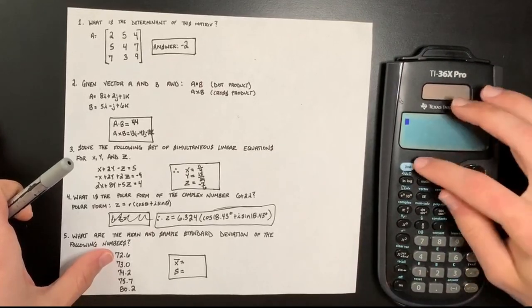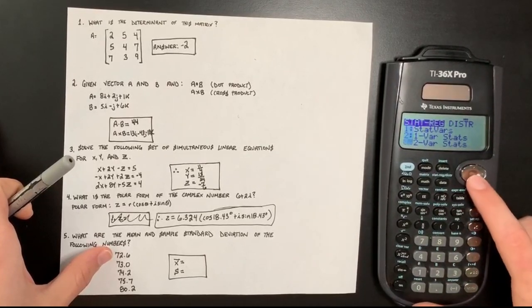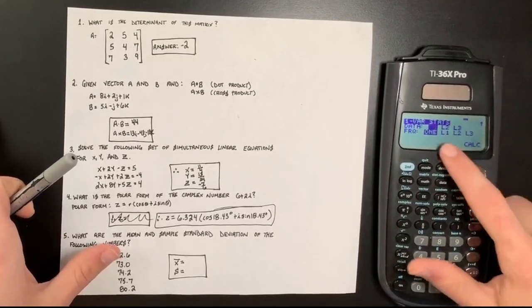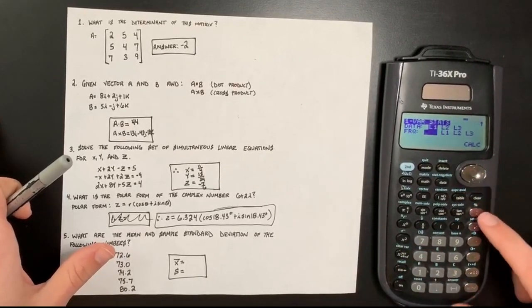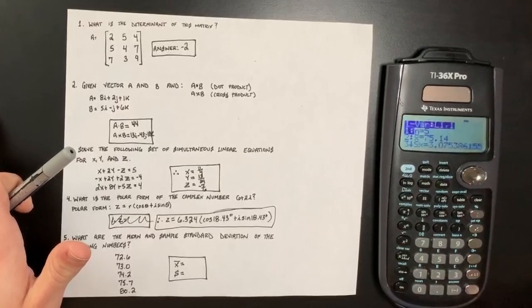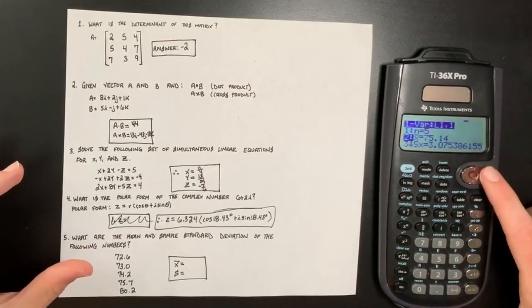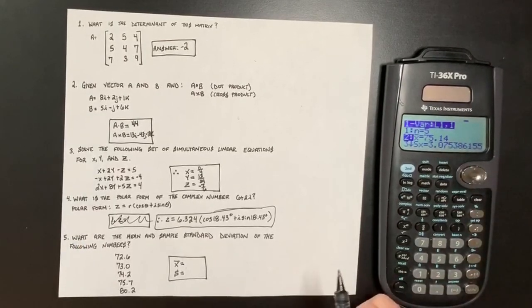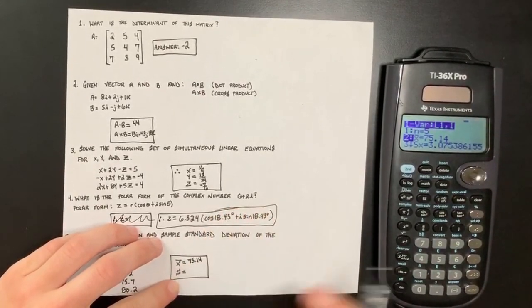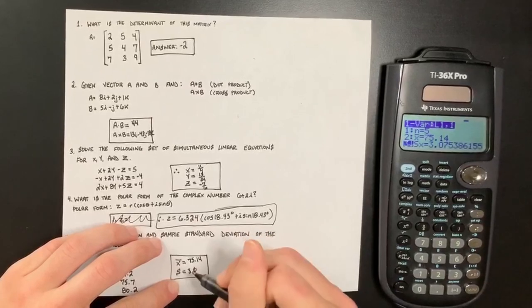So you do second quit and you go to second stat button. So you hit that and you go down to one variable stats and then you do, so this is where you select what list we just put it in. So we use list one and the frequency. So we only want to do it with the frequency of one for a question like this. Hit calc and just like that, you're given the solution to this question. So you scroll down to number two, the mean 75.14 and the sample standard deviation is 3.08.